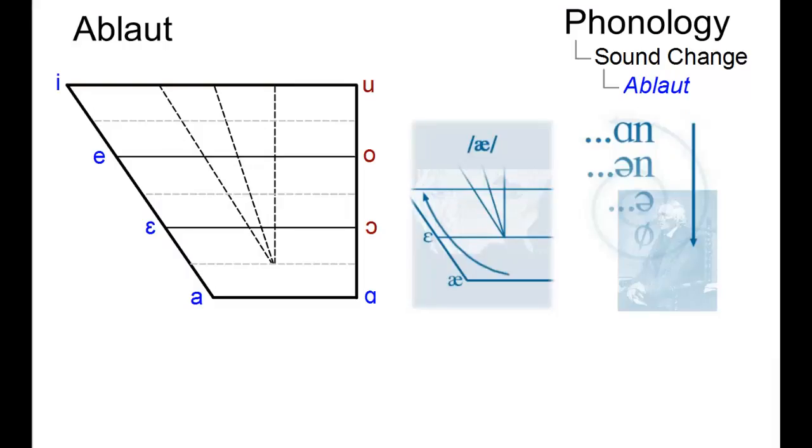Ablaut is a system of regular vocalic variation in Proto-Indo-European that has far-reaching consequences in all of the modern Indo-European languages.